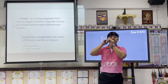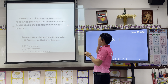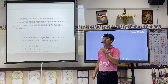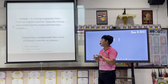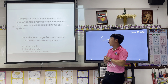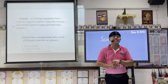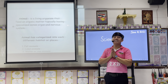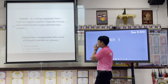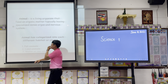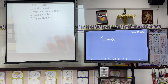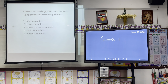Before that, we're going to define the word 'animals.' Animals is a living organism that feeds on organic matter, that can have specialized sense organs and a nervous system. Animals have been categorized into different places.